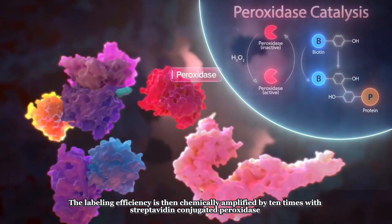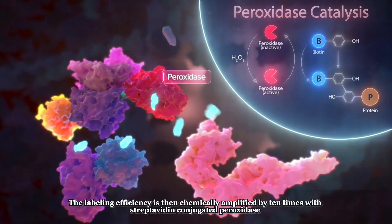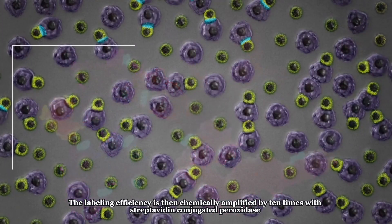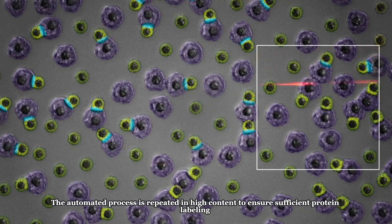The labeling efficiency is then chemically amplified by 10 times with streptavidin-conjugated peroxidase. The automated process is repeated in high content to ensure sufficient protein labeling.